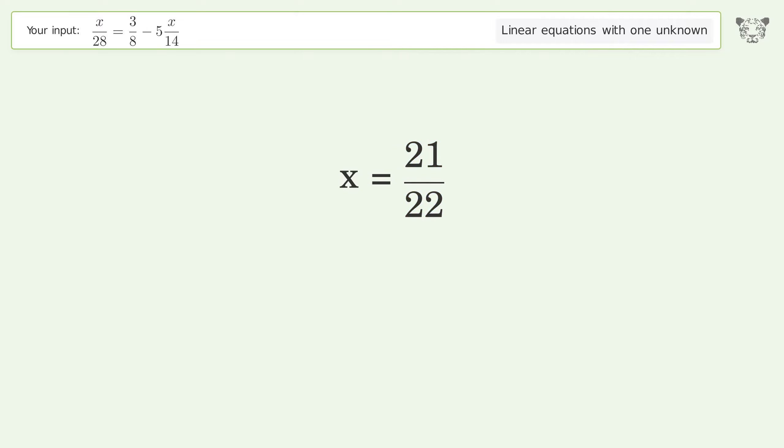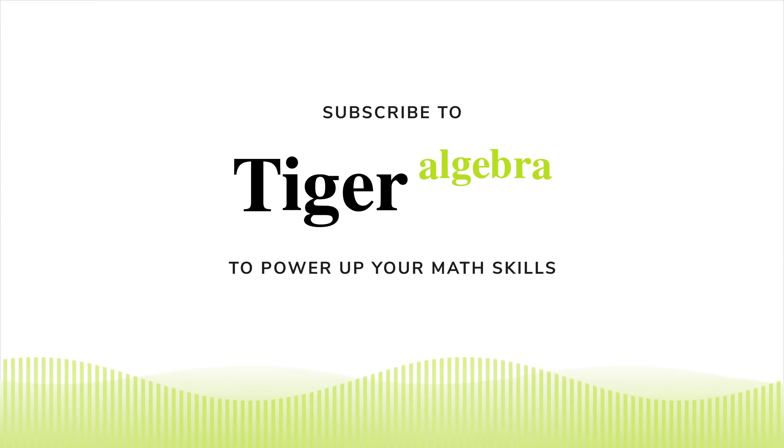And so the final result is x equals 21 over 22.